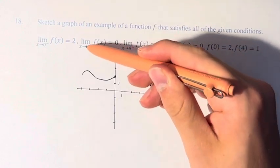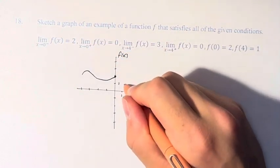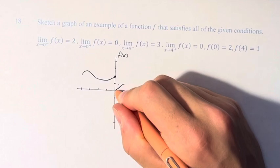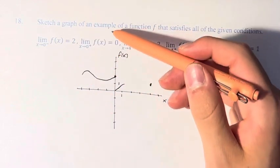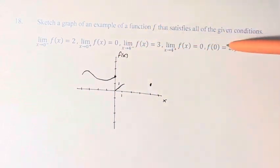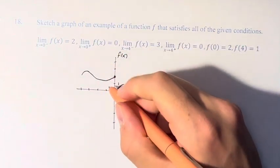Because as we'll see, when it's coming from the right, the function is going towards 0. And since it doesn't actually go all the way to 0, because at 0 it's actually equal to 2, we have an open circle.